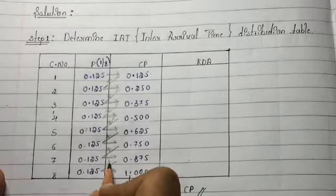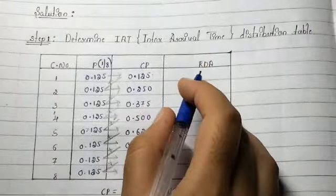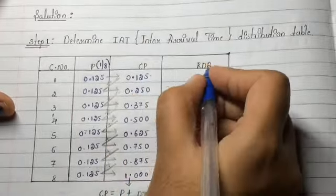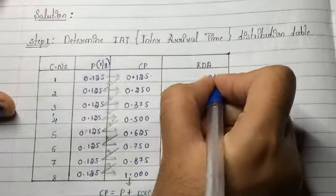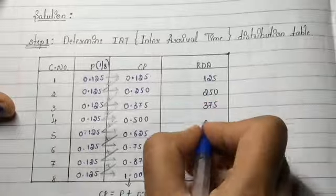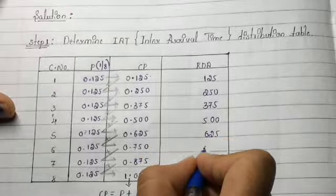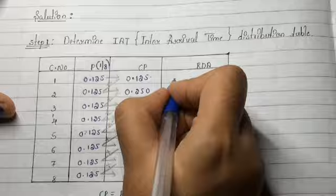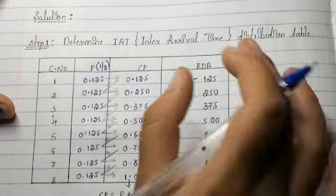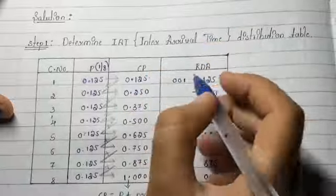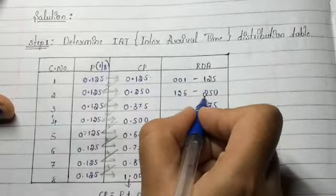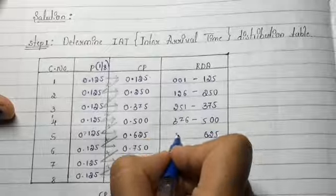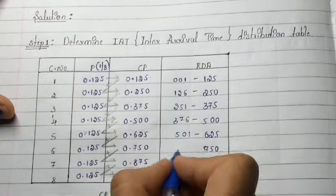For random digit assignment, consider the digits after the decimal point and write them to the right. The values are 125, 250, 375, 500, 625, 750, 875, 000. We start from 1, so the first interval is 1 to 125, next 126 to 250, then 251 to 375, next 376 to 500, then 501 to 625, 626 to 750, 751 to 875, and 876 to 000.